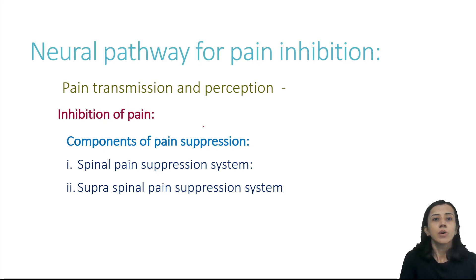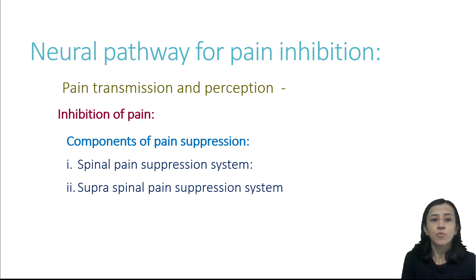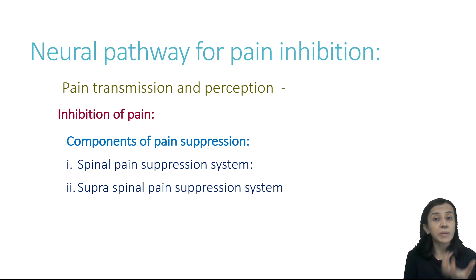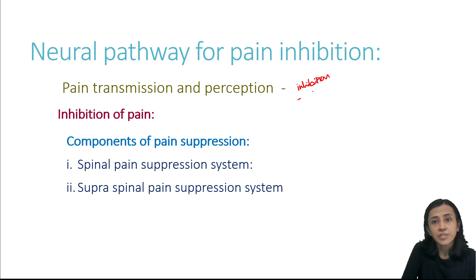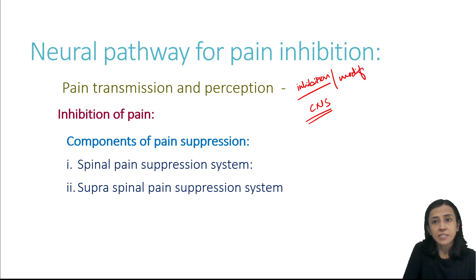First of all, pain transmission as well as pain perception — whatever pain is transmitted to the central nervous system and whatever pain is perceived by the individual — that is subjected to inhibition or modification within the central nervous system. Inhibition or modification of pain takes place in the central nervous system.